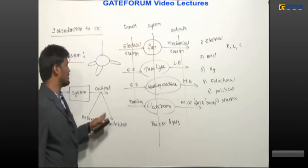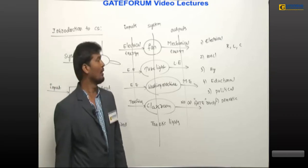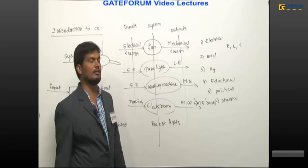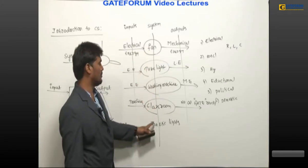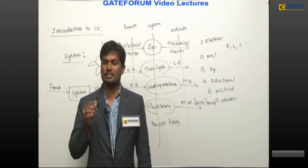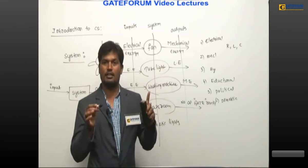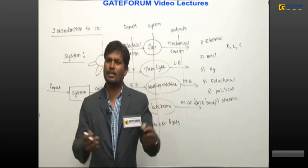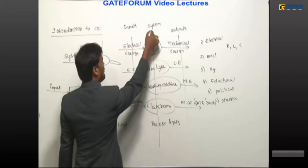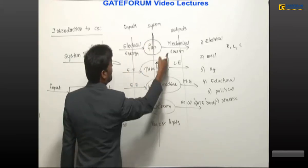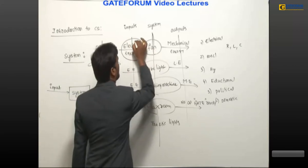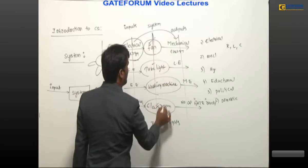Any system has a certain input and produces output; the output may be desired or undesired. In a classroom, teacher, students, benches, whiteboard, marker, duster, AC, fan, and lights are all components working together to perform a certain task — that is a system. Also note that in any system, input is one form of energy and output is another form of energy. According to the law of conservation of energy, energy cannot be created or destroyed — it can only be converted from one form to another with the help of systems.